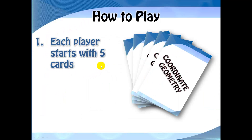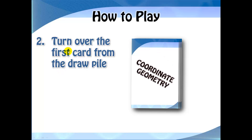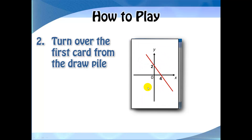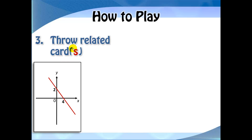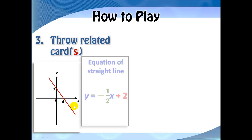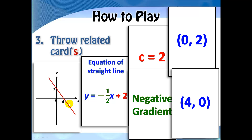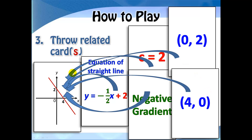Now let's see how we play this game. Each player will start with 5 cards. We will turn over the first card from the draw pile. The first player will play related cards. If you have 3 or 5 cards related to the graph card showing, you can play all of them. For example, this card is related because the gradient is negative half and the y-intercept is 2.